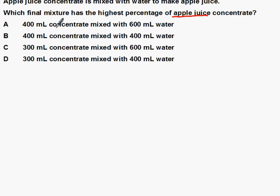So this has 400 milliliters plus 600, that's a total of 1,000 milliliters. This one has 400 and 400, that's a total of 800 milliliters. This one has 300 and 600, that's a total of 900 milliliters. And the last one has 300 and 400, which is a total of 700 milliliters.